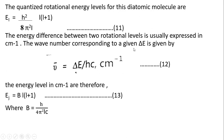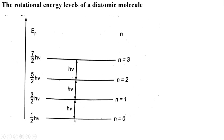The wave number corresponding to a given ΔE is given by ν̄ = ΔE / (hc), equation number 12, where ν̄ is the wave number. The energy levels in centimetres are therefore E_J = B · L(L+1), equation number 13, where B = h / (4π²·I·c). The rotational energy levels of a rigid diatomic molecule and the allowed transitions are shown in this figure. The selection rule for a rotational transition is ΔL = ±1.